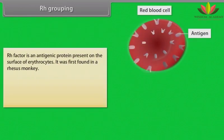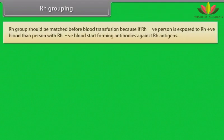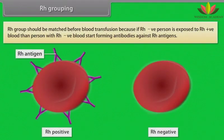RH grouping. The RH factor is an antigenic protein present on the surface of erythrocytes; it was first found in a rhesus monkey. If the RH antigen is present, those persons are called RH positive; if the RH antigen is absent, they are called RH negative. The RH group should be matched before blood transfusion, because if an RH negative person is exposed to RH positive blood, they will start forming antibodies against RH antigens.